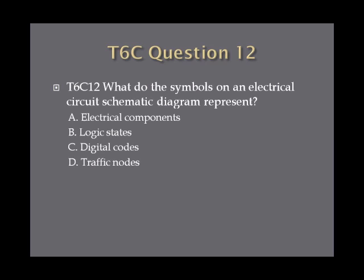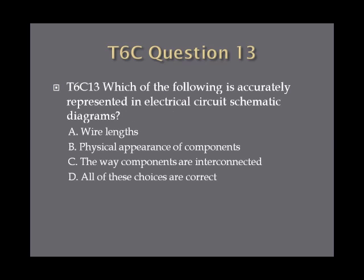Question 12: What do the symbols on an electrical circuit schematic diagram represent? A. Electrical components. B. Logic states. C. Digital codes. Or D. Traffic nodes. Question 13: Which of the following is accurately represented in electrical circuit schematic diagrams? A. Wire lengths. B. Physical appearance of components. C. The way components are interconnected. Or D. All of these choices are correct.